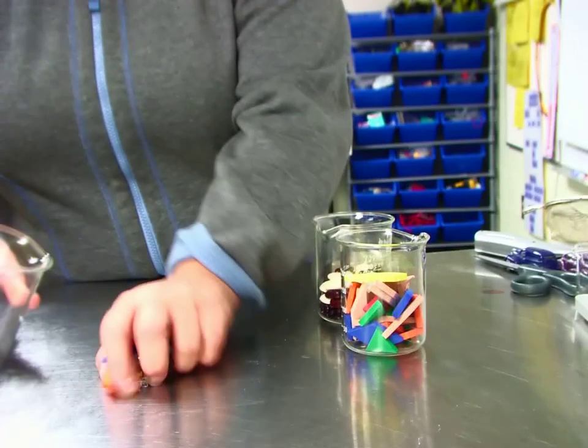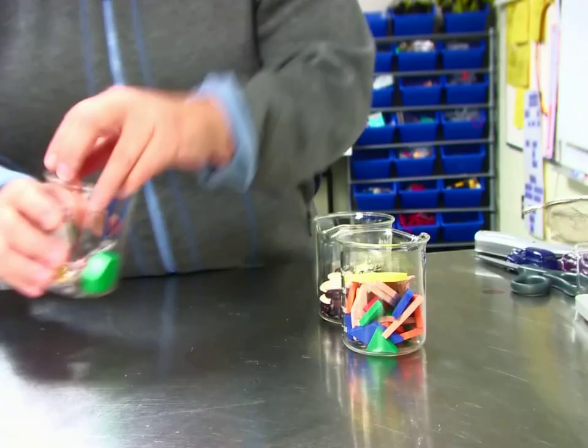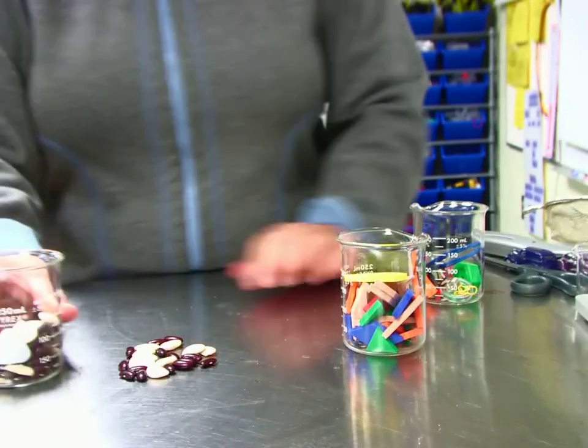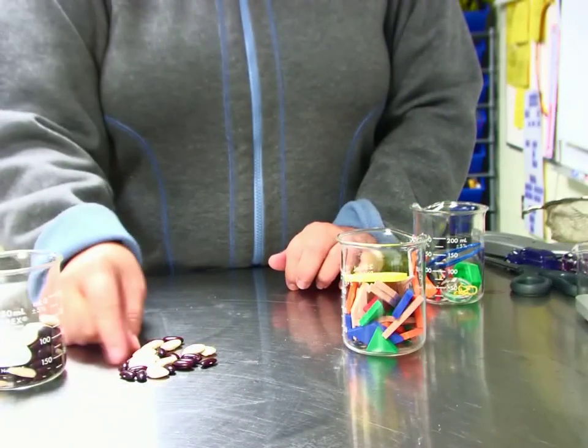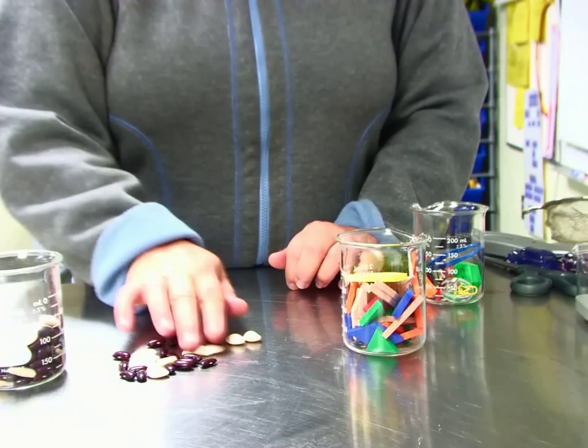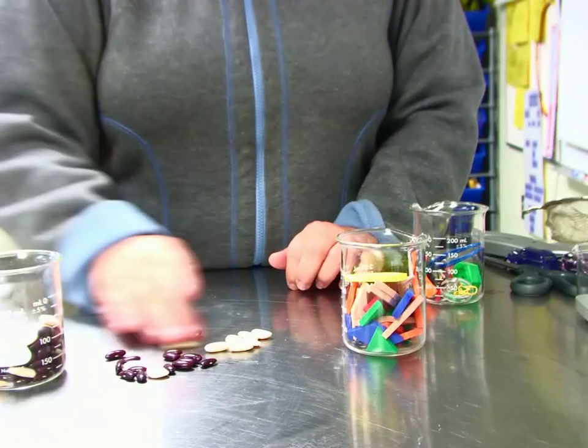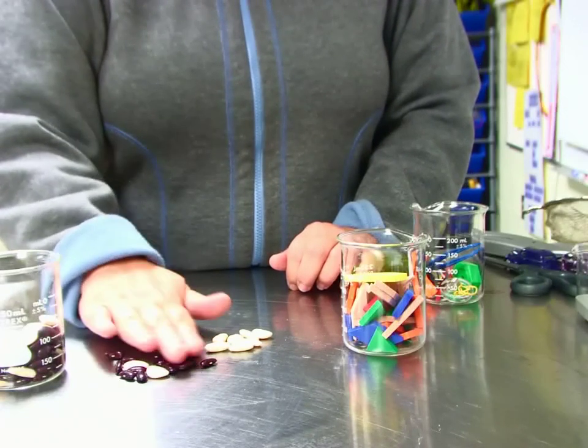If I take this beaker, for example, we've got some different kinds of beans in here. I can separate them based on their size. The white beans are obviously much larger than the reddish-brown beans.